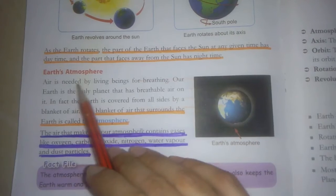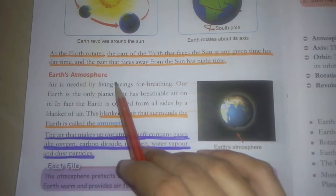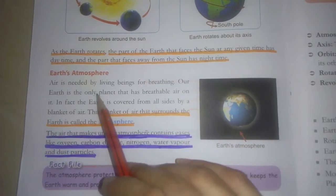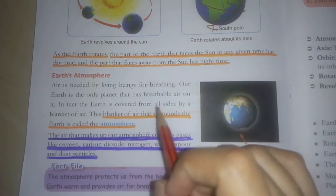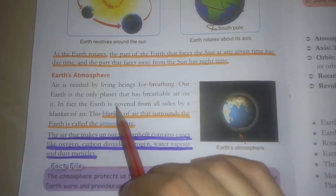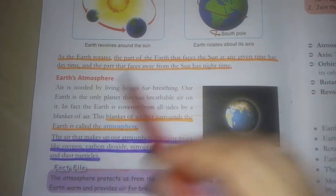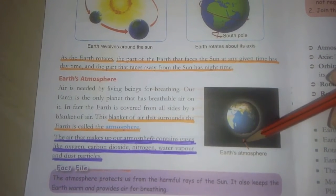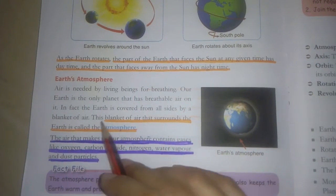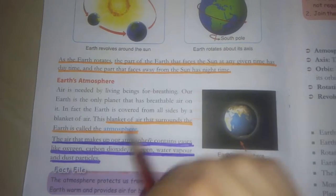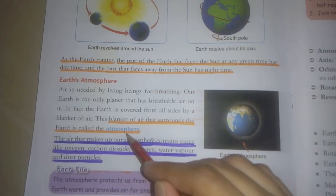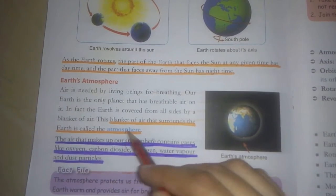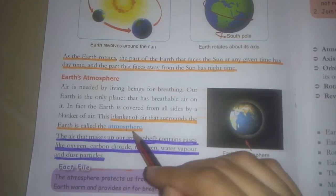Now next topic is earth's atmosphere. How is our earth's atmosphere? Air is needed by living beings to breathe. You all know that living beings need air to breathe. Our earth is the only planet that has breathable air on it. Our earth is the only planet where air is present for breathing. In fact, the earth is covered from all sides by a blanket of air. This blanket of air that surrounds the earth is called atmosphere.